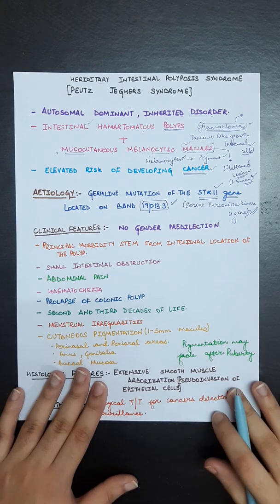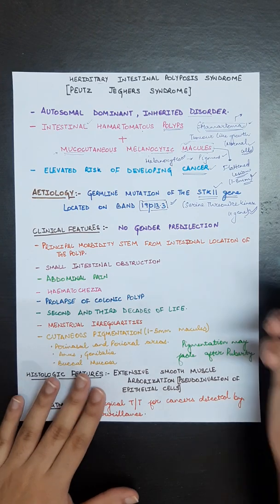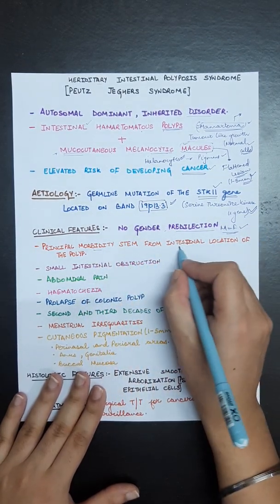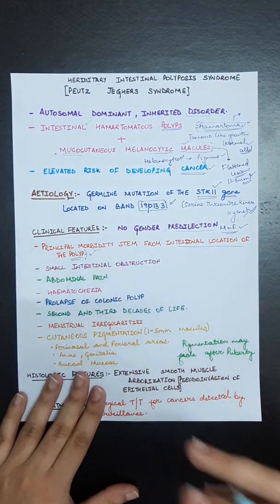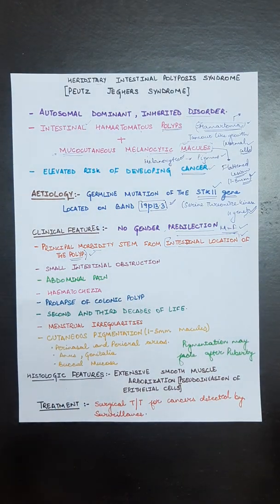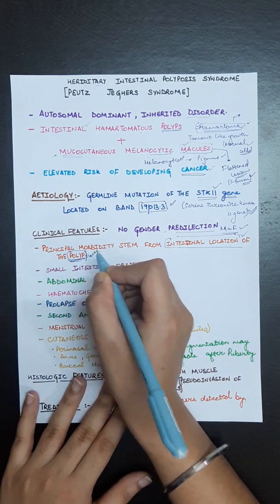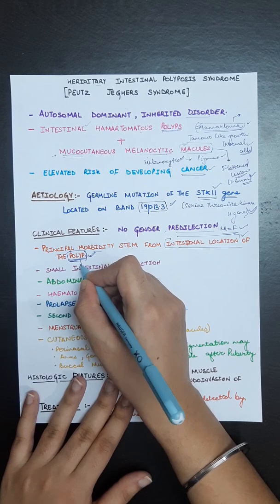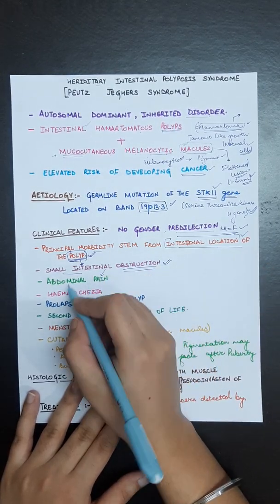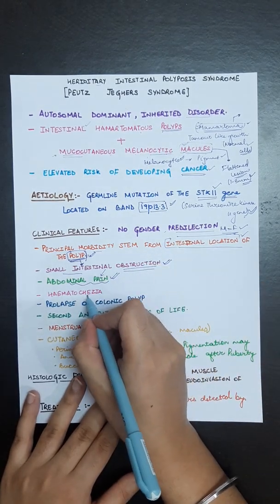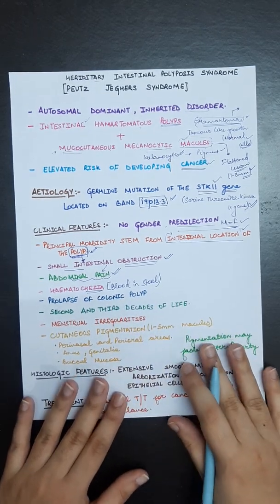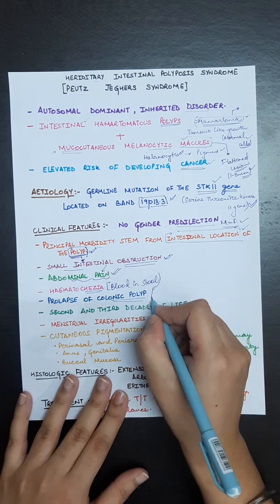Now the clinical features. There is no gender predilection; males and females are equally affected. The principal morbidity stems from intestinal location of the polyp. As there is an abnormal growth in the intestine, it will cause small intestinal obstruction, which will cause abdominal pain. Hematochezia, meaning blood in stool, will be there.